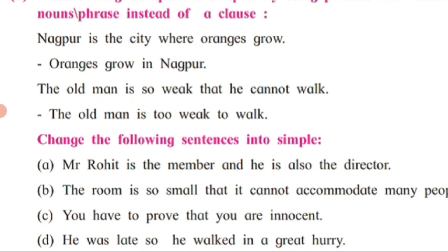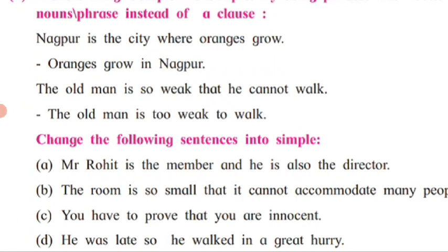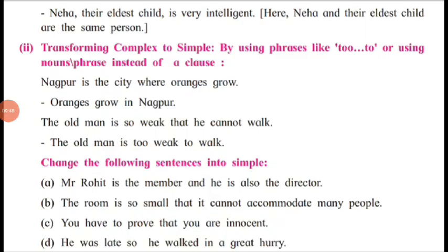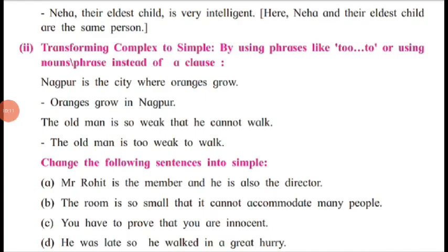Next, change the following sentences into simple form. 'Mr. Rohit is a member and he is also the director' can be written as 'Mr. Rohit is a director and member' — or more precisely, 'Mr. Rohit, the member, is also the director.' Similarly, 'The room is so small that it cannot accommodate many people' becomes 'The room is too small to accommodate many people.'